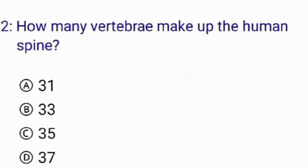What is the weight of the human heart? The correct answer is option C: 310 grams. How many vertebrae make up the human spine? The correct answer is option B: 33.